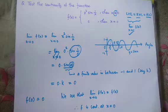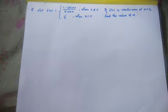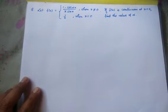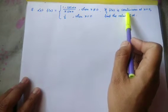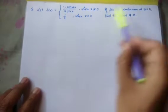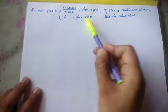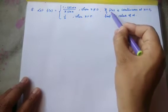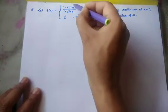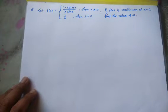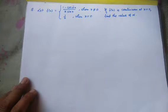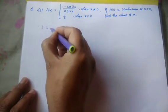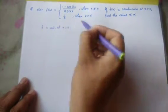Now we see that limit x tends to 0 of f(x) equals f(0) — both are 0. The meaning of this is that the function f is continuous at x equals to 0. Now let's see the solution for the next particular question. The function is again a split function and it is said that f(x) is continuous. Since the function is continuous at x equals to 0, function being continuous means: limit x tends to c of f(x) equals to f(c).